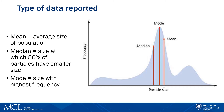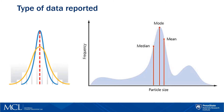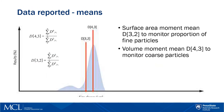For a monomodal distribution, mean, mode, and median are all the same value. Other parameters that are often reported are surface area mean, D32.